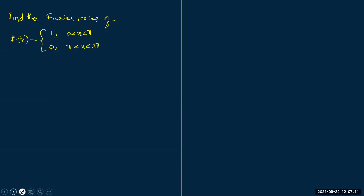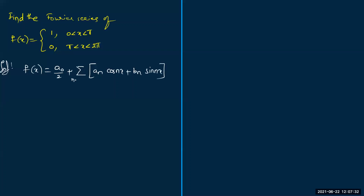We write the Fourier series using the regular formula: f(x) equals a₀ by two plus summation of aₙ cos(nx) plus bₙ sin(nx), where summation takes values from n equals one to infinity. For the Fourier coefficients, a₀ is given by one by pi times the integral from zero to two pi of f(x) dx.